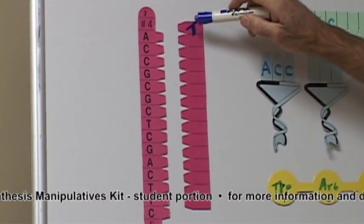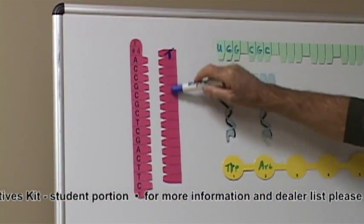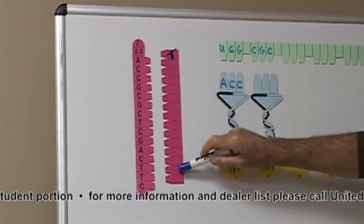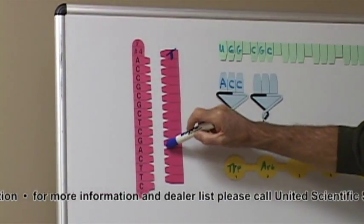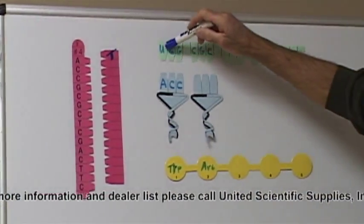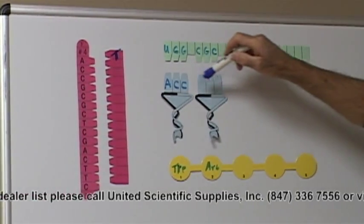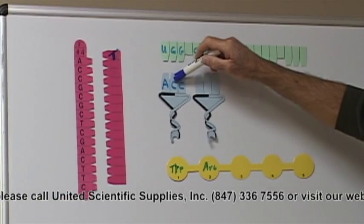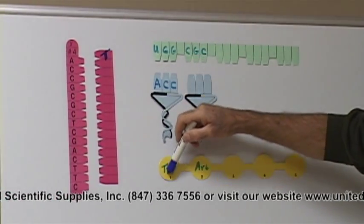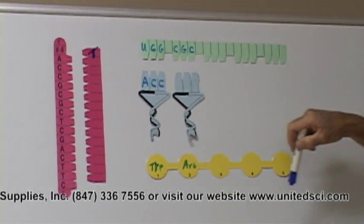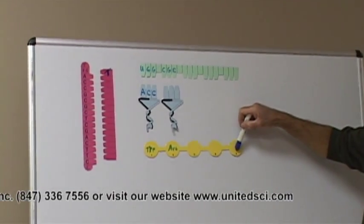The job of your students will be to code the complementary bases on the DNA strand, code the anti-codons on the messenger RNA, code the anti-codons on the transfer RNA, and code the amino acids on the evolving chain.